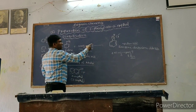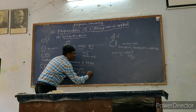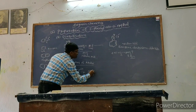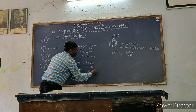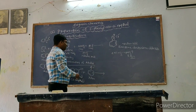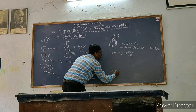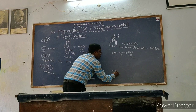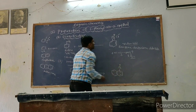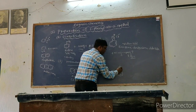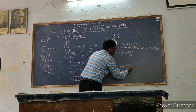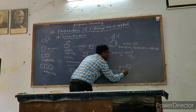Then we add the benzene diazonium chloride yellow color solid to the beta-naphthol, or alternatively we add the naphthol to the benzene diazonium chloride. What happens is we get an orange-red color solid as the product.